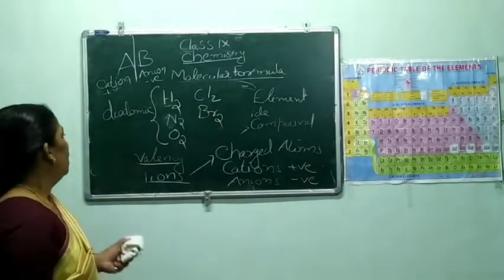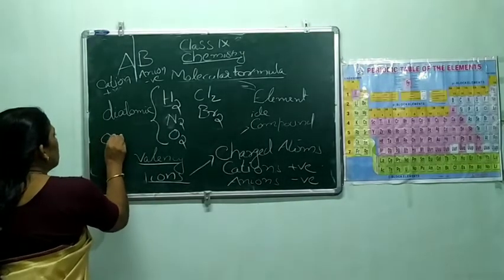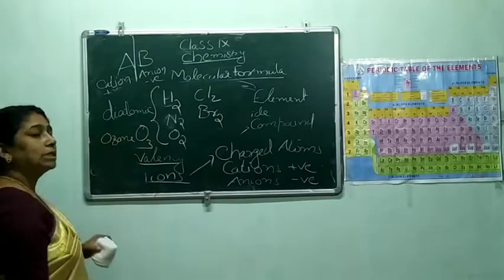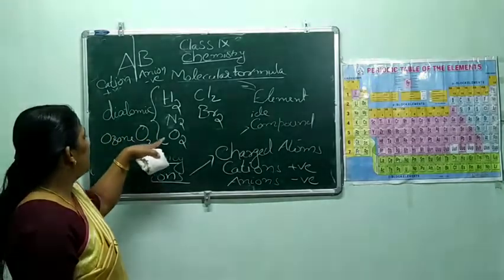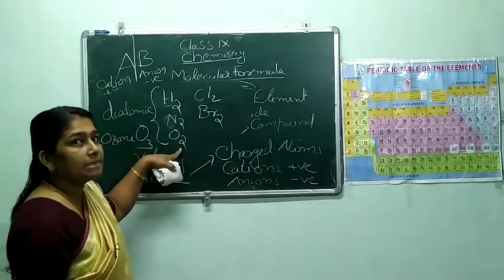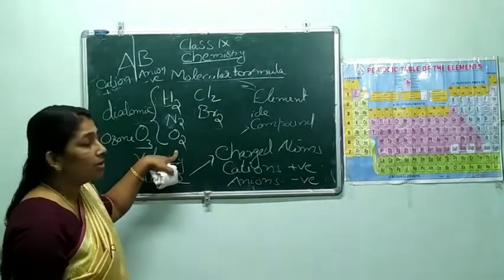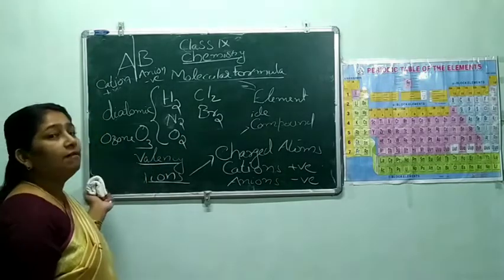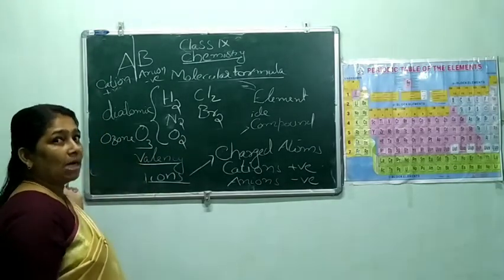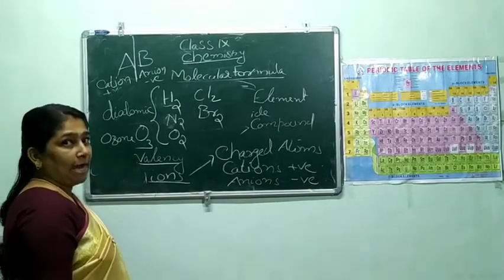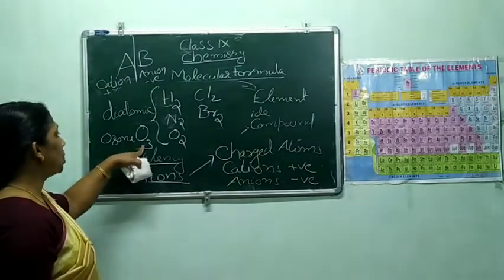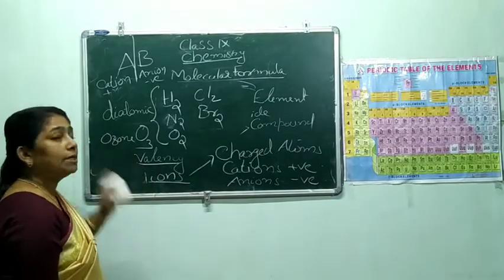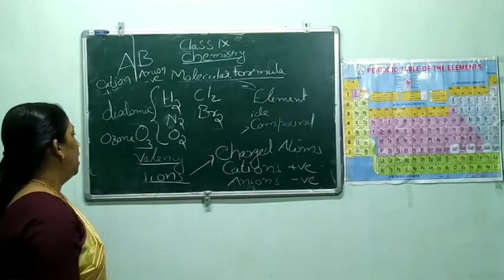Consider ozone — O3. The number of atoms we represent as the subscript suffix, and the number of molecules we write as prefix on the left-hand side. Ozone: three oxygen atoms combine together, so it is triatomic.